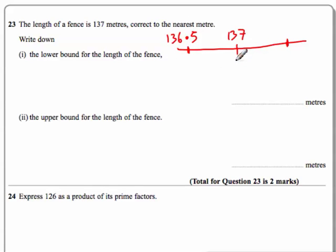What we've actually done is we've subtracted 0.5. We've taken 0.5 away from 137 and we've ended up with 136.5.